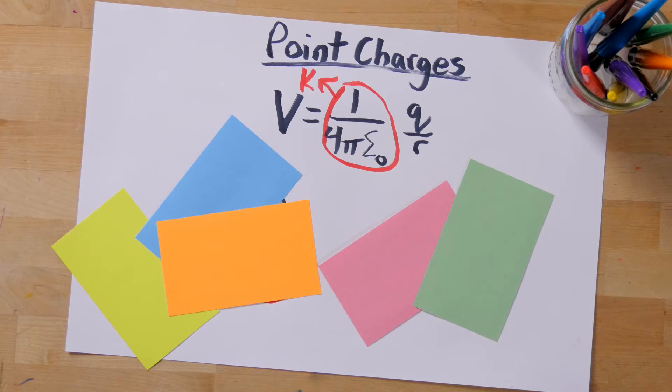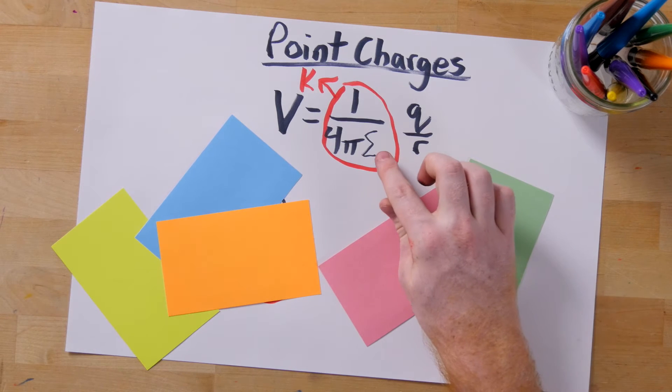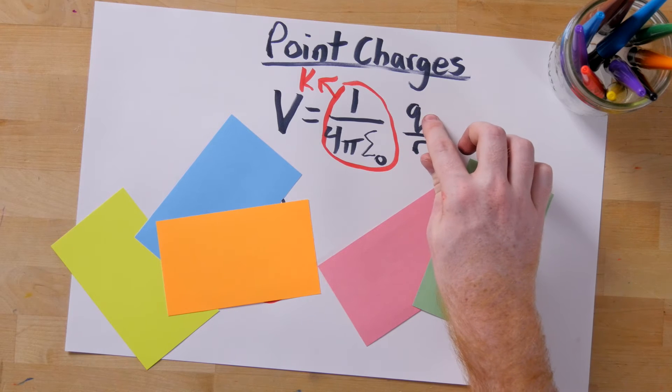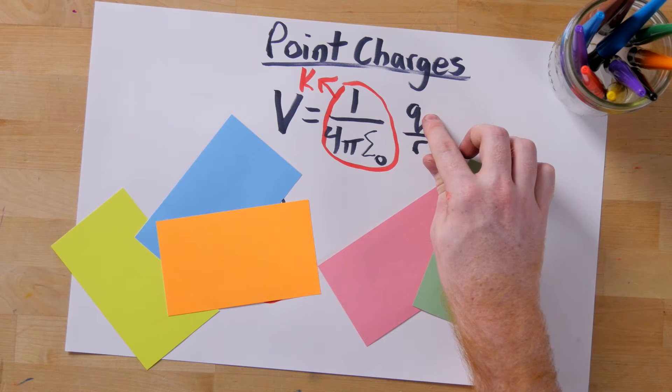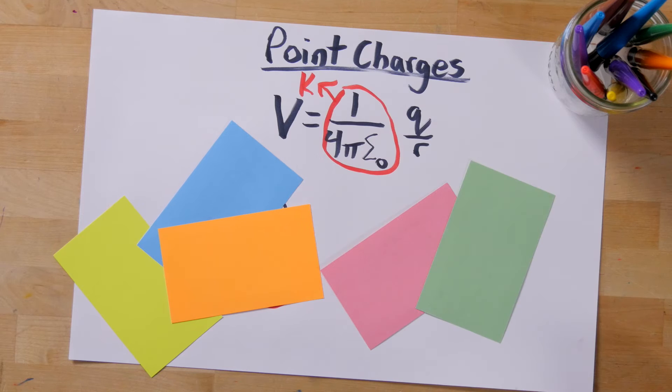For a single point charge, we have an equation to calculate the potential it creates around it. Knowing the point charge's charge, we can measure what the potential is at any point r meters away from it. So great, for one charge we can calculate the potential anywhere.